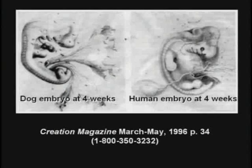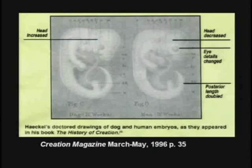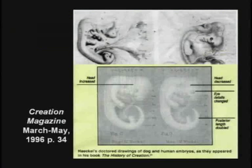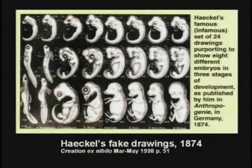Haeckel took a drawing of a dog and a human embryo — he was an embryology professor, you know — and he lied. He faked the drawings, changed them and made them look exactly alike to prove they're related. Just a bald-faced lie. Haeckel made giant posters of his fake drawings and traveled all over Germany, converting people to believing in evolution, which led to the next obvious question: if evolution is true, which race of humans has evolved the farthest? And guess who the Germans thought it was?